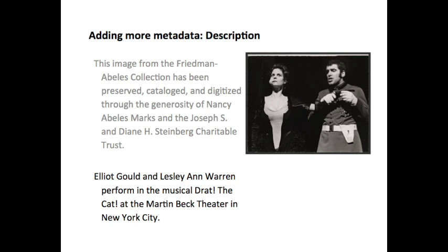The original description in gray includes administrative information about the collection, and it doesn't really have much to say about this particular photograph. We can improve it by adding the actors' names, the musical's name, and the location of the performance. You can see that this new description repeats some information from the title, which is natural since both fields are attempting to summarize the resource. It would not be wrong if we chose to include the information from the original description as well, so that administrative information about the collection. But we want to make sure that, at the very least, we have information that's specific to the photograph.